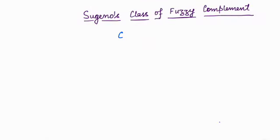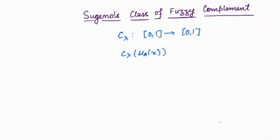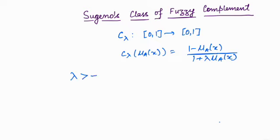This class of complement function is defined as: it's a function c_lambda from [0,1] to [0,1], where c_lambda takes the membership grade mu_A(x) to (1 minus mu_A(x)) upon (1 plus lambda times mu_A(x)), where lambda must be greater than minus 1. This is how Sugeno defined the complement function.